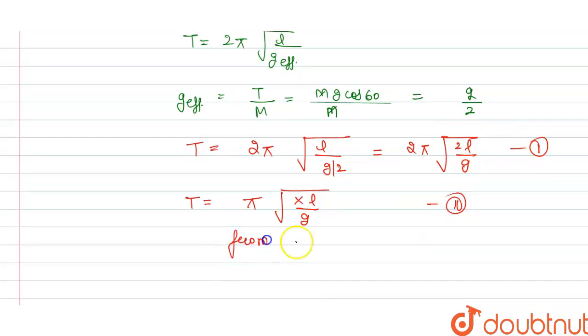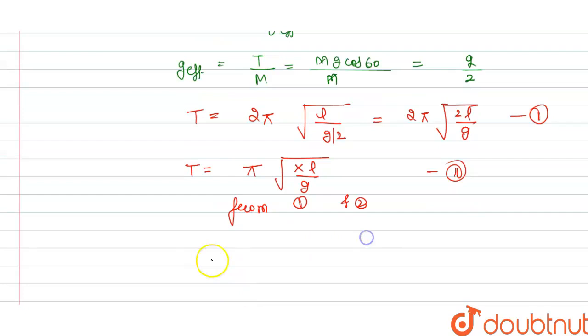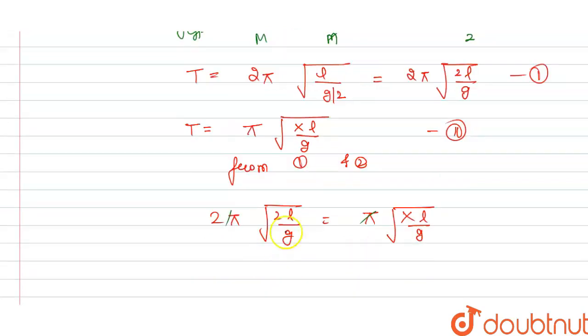From equations 1 and 2, by comparing, 2π√(2l/g) = π√(xl/g). The π's cancel out, and √(l/g) cancels out. We're left with 2√2 = √x.